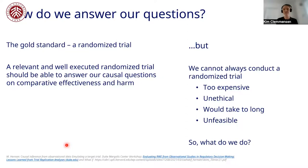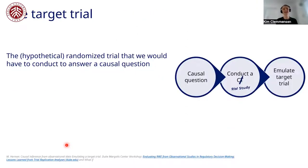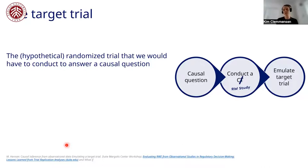There are multiple things we could do, but I'll propose we use the target trial framework. We formalize and think about a hypothetical randomized trial that we could conduct to answer our causal question. When we've really thought about it and made sure that conducting this trial would actually answer our question, we're also forced to think about whether the question we're proposing is in fact a causal question that is possible to answer.